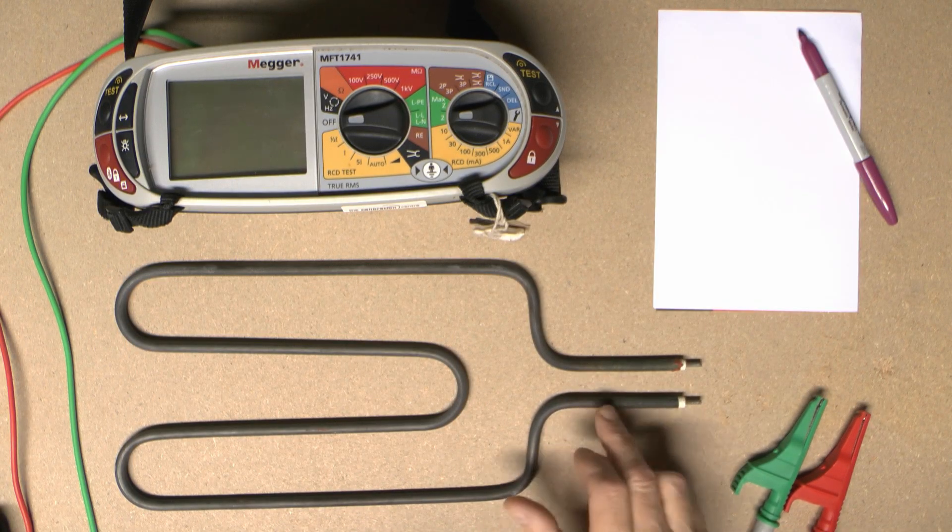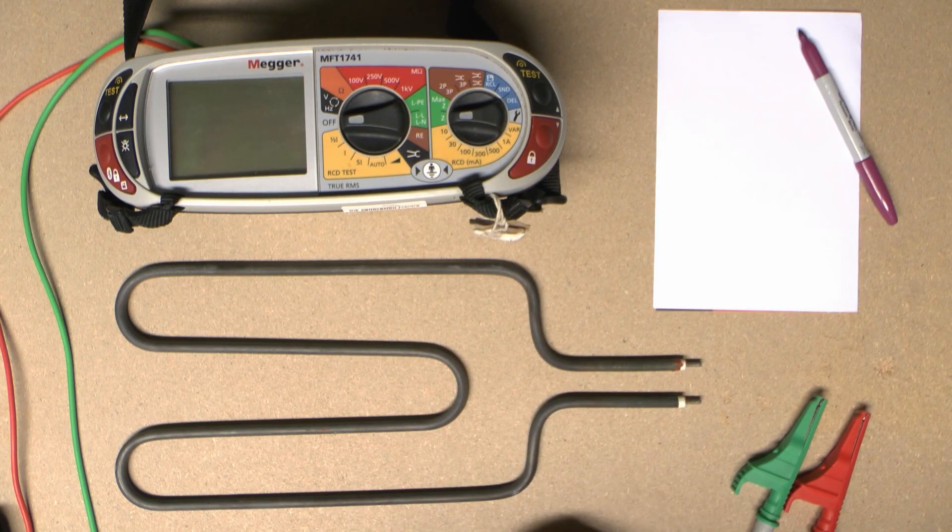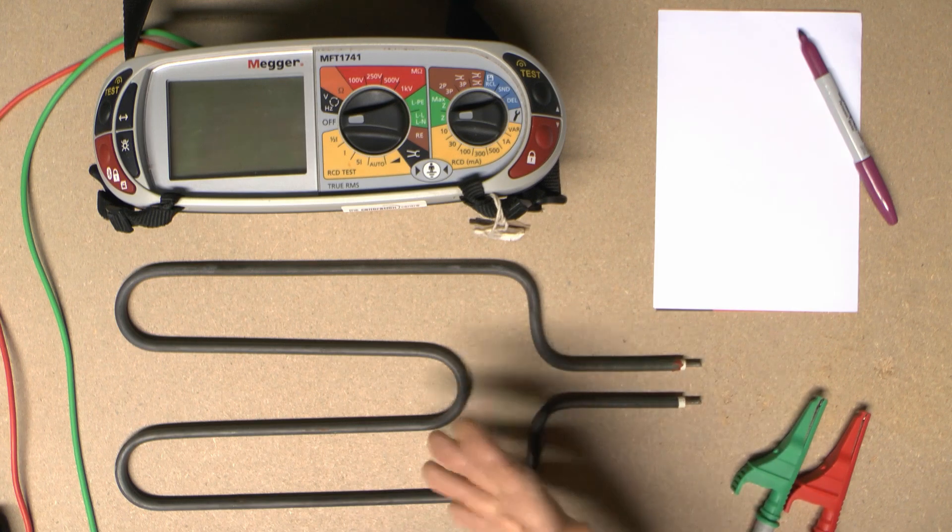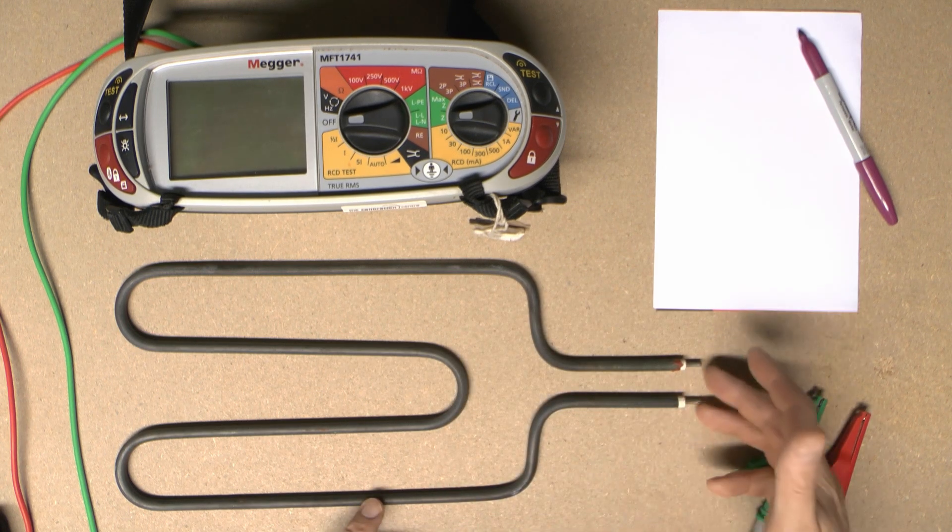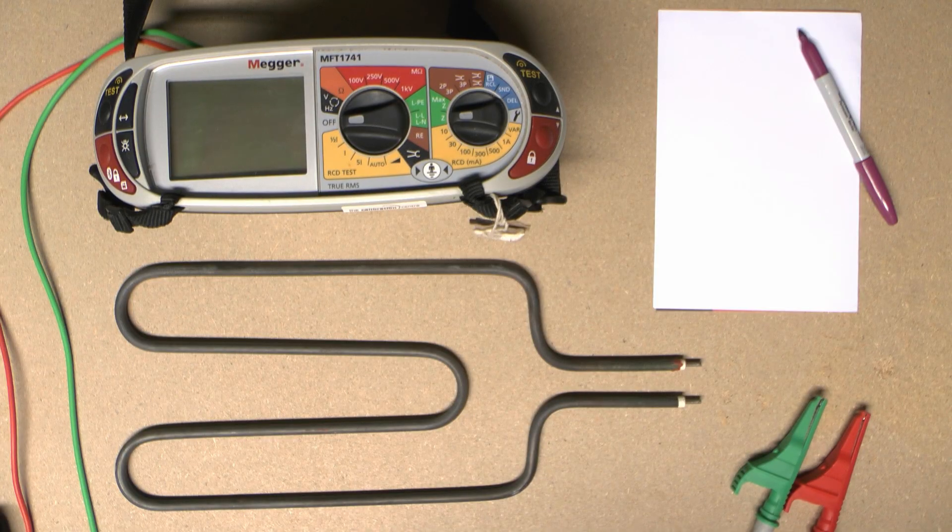This covering is either connected to the earth connection, or in some cases it's left floating, as in a storage heater. If you get any connection between a pin and the outer covering, something's gone wrong inside. And if you find there's no resistance between these two pins, the element is broken internally and will not work.